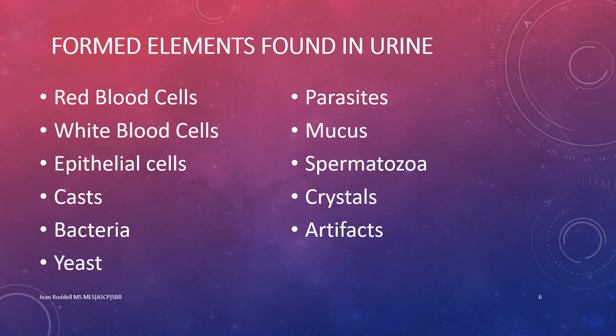Formed elements can be contributed from the blood, kidney, lower genitourinary tract, and external contamination. These include red blood cells, white blood cells, epithelial cells, casts, bacteria, yeast, parasites, mucus, spermatozoa, crystals, and artifacts. Some components are clinically significant, and others are normal except when present in increased amounts. Therefore, examination of urinary sediment must include both identification and quantification of elements present.